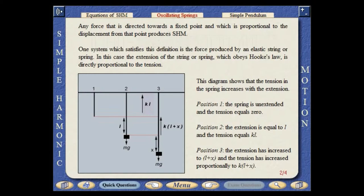The diagram shows that the tension in the spring increases with the extension. At position 1, the spring is unextended and the tension equals zero. At position 2, the extension is equal to L and the tension equals K times L. At position 3, the extension has increased to L plus X and the tension has increased proportionally to K times L plus X.